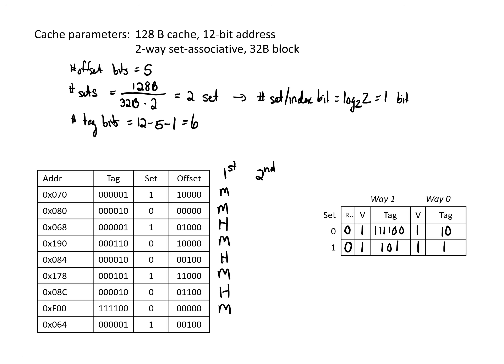Finally, the last access goes to set 1 and looks for tag 1. Set 1 already has tag 1, so we have a hit. For the second time through: starting again at set 1, tag 1 is in place, so that's a hit. We update LRU for set 1 to 1, since we just accessed way 0. For the second address, set 0 has tag 1,0 in way 0, so that's a hit, and we update LRU to 1. Third access: set 1 has tag 1, so this is a hit again.